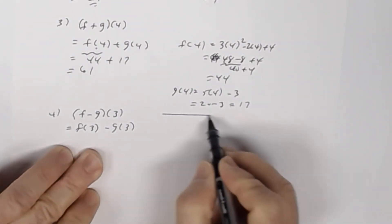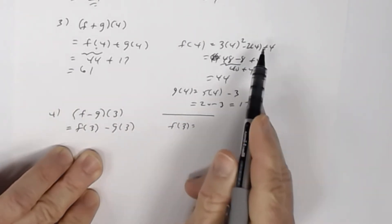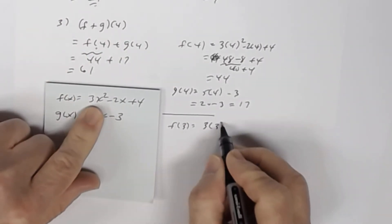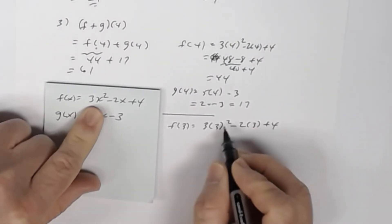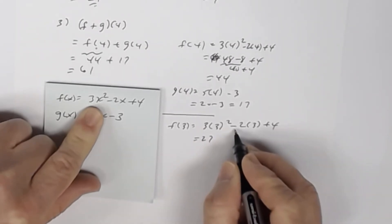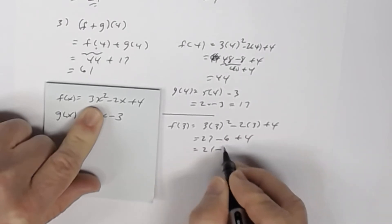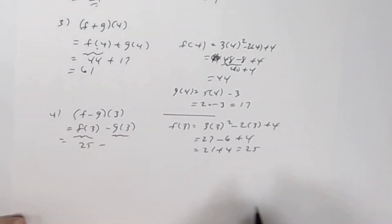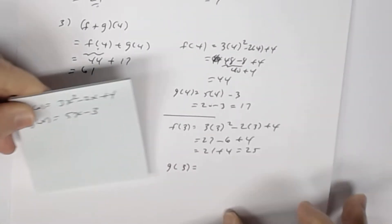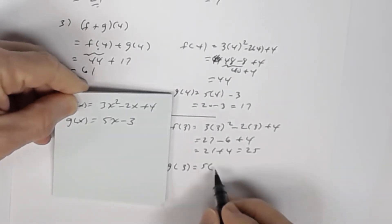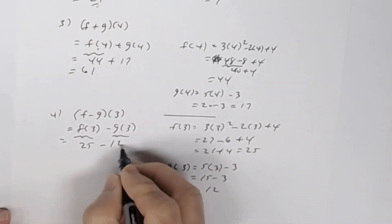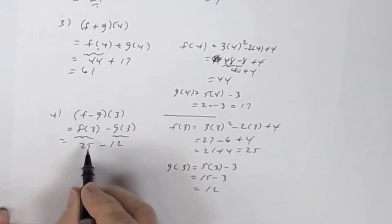Let's find f of 3: substitute 3 into function f to get 3 times 3 squared minus 2 times 3 plus 4. 3 squared is 9; 9 times 3 is 27. Negative 2 times 3 is negative 6, plus 4. That is 21 plus 4, which is 25. So f of 3 is 25. Now find g of 3: substitute 3 into the linear function g of x to get 5 times 3 minus 3, which is 15 minus 3, which is 12. So (f − g)(3) = 25 minus 12, which is 13. The answer to number 4 is 13.